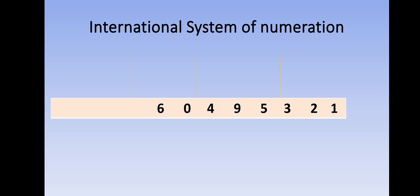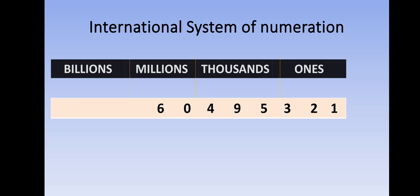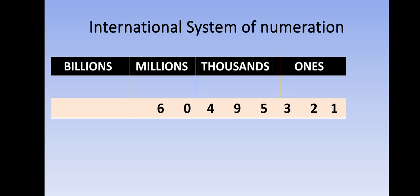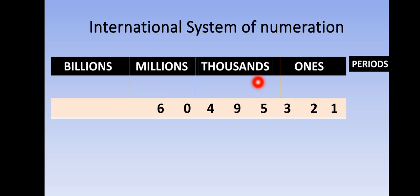The first step is that we should write the periods. In the international system we have the periods: Ones, Thousands, Millions, and Billions.